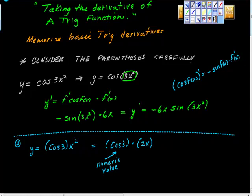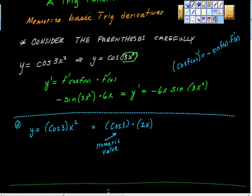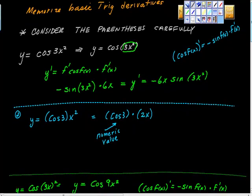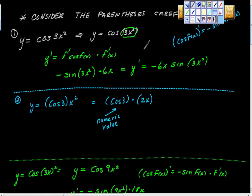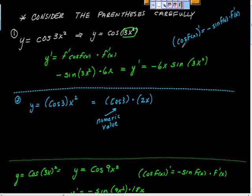One thing is, when we look at trigonometric functions, is to consider the parentheses really carefully and ask ourselves what does it really mean. So in the first case, y equals cosine of 3x squared — that is what it means, it means exactly what you think it means. We memorized that the first derivative of cosine of f(x) is equal to the opposite of sine of f(x) times f prime of x.